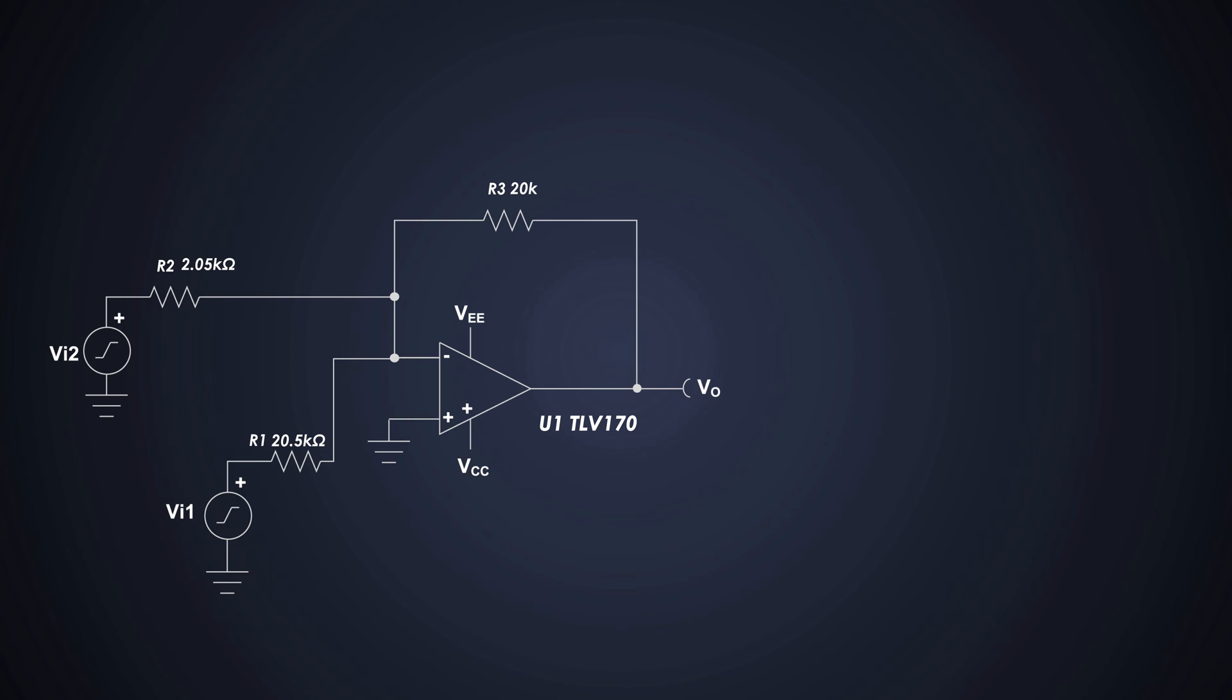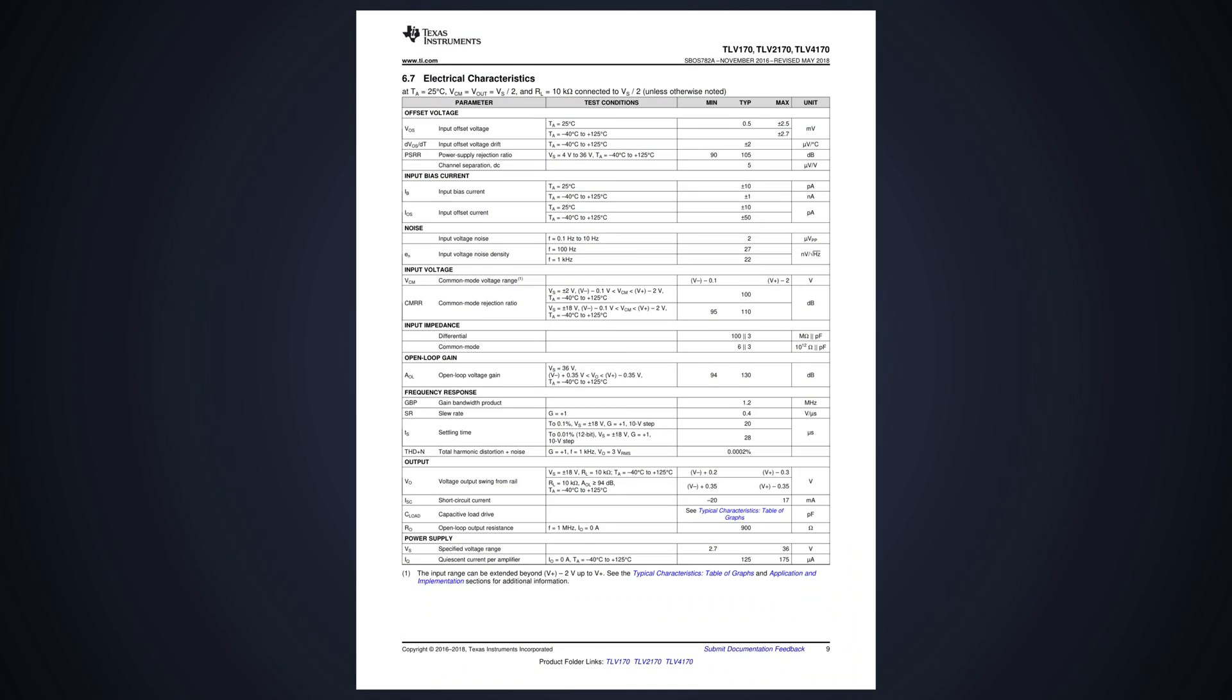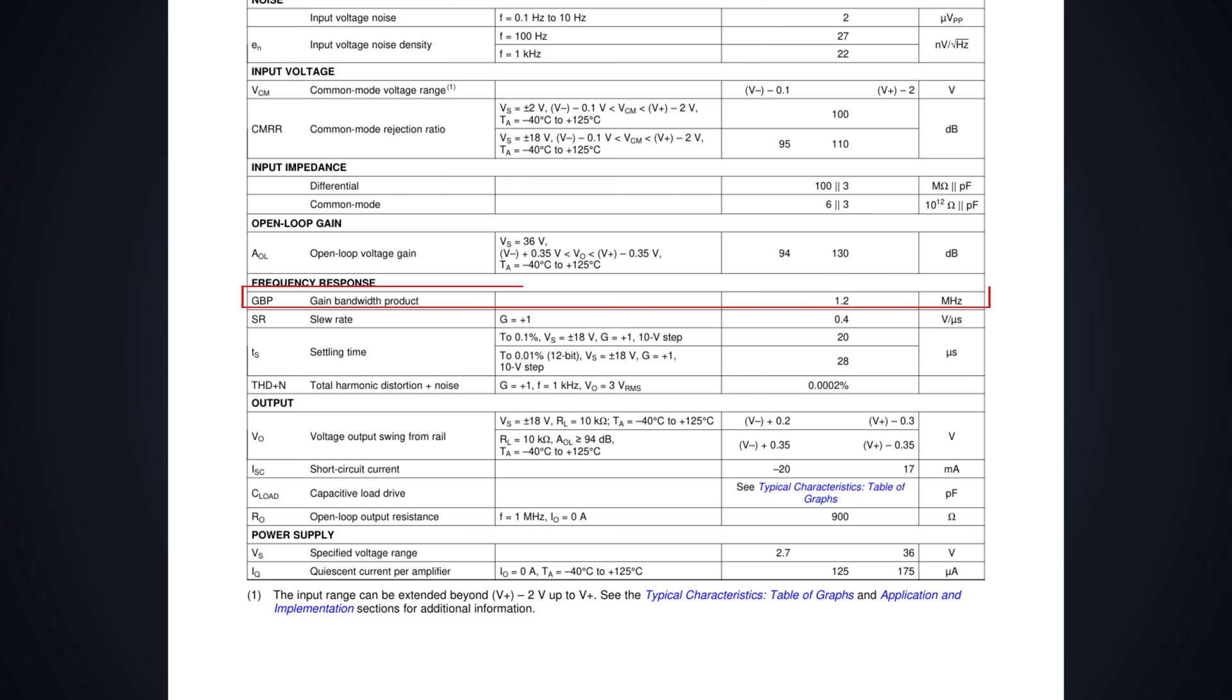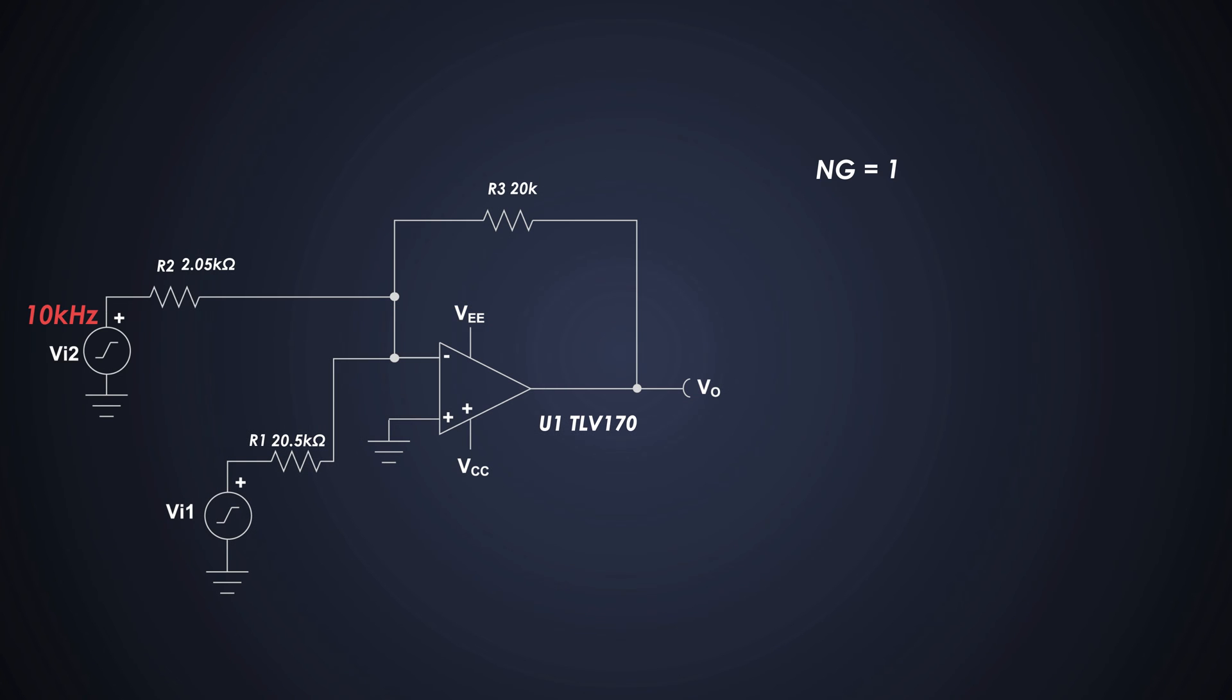Now let's find out if our amplifier can handle that 10kHz signal or not. To check that, we have to consider the non-inverting gain and the gain bandwidth product which is mentioned in the op-amp datasheet. So the gain bandwidth product of the op-amp is 1.2MHz. Now we will calculate the non-inverting gain of this op-amp.